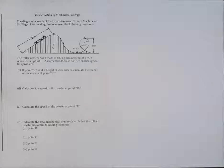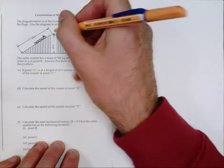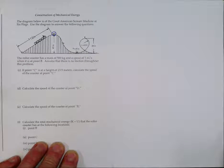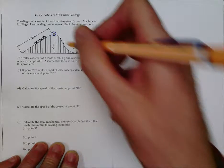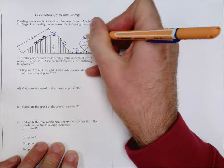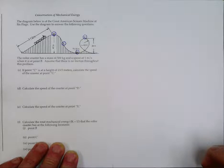An important thing anytime you do an energy problem is to identify the important locations in the picture. In this picture it's already done for you. The letter B is printed right there — that's where the roller coaster starts — and then C, D, and E are all important locations in this problem. It's good to identify where those locations are.